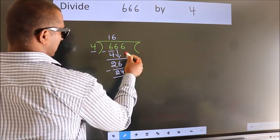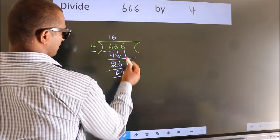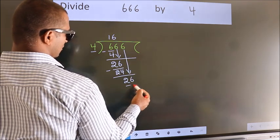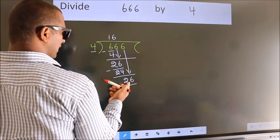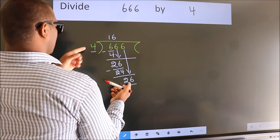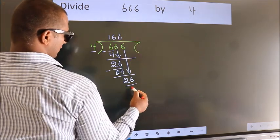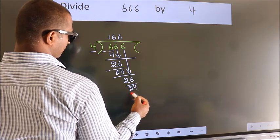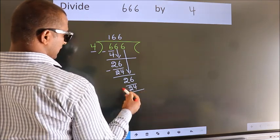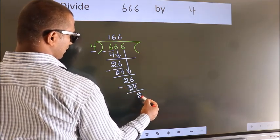After this, bring down the beside number. So 6 down. So 26. A number close to 26 in the 4 table is 4 times 6 is 24. Now we subtract. We get 2.